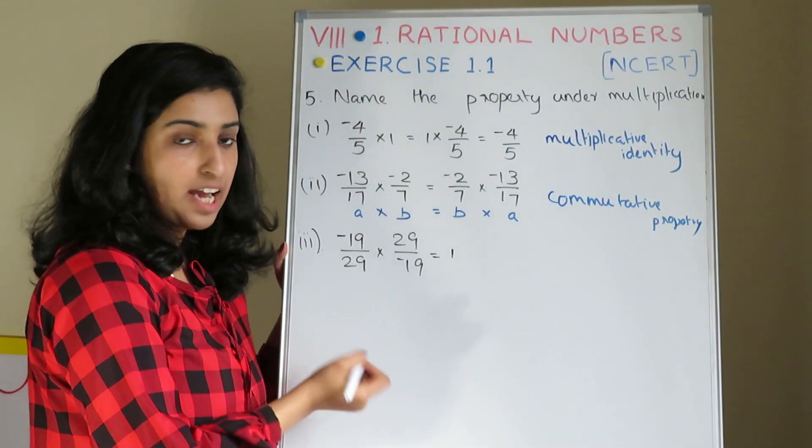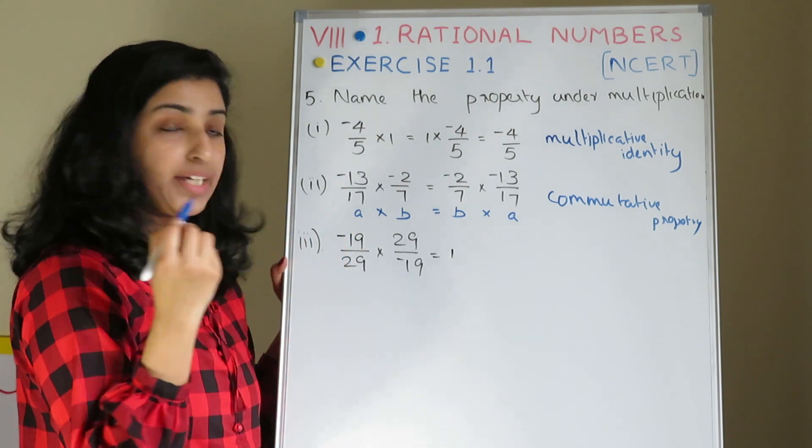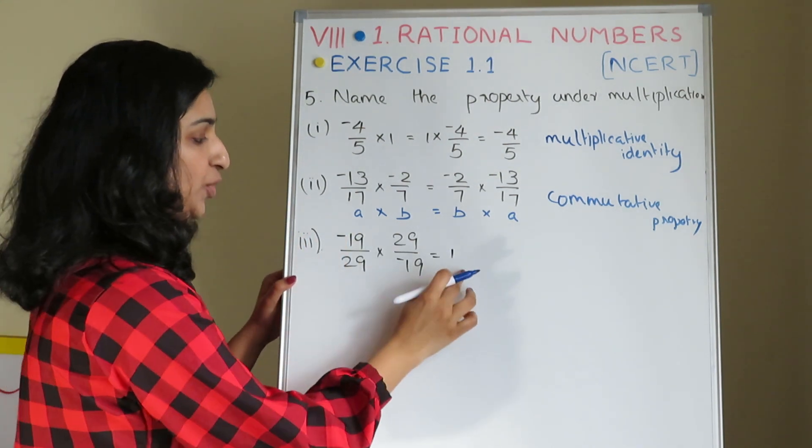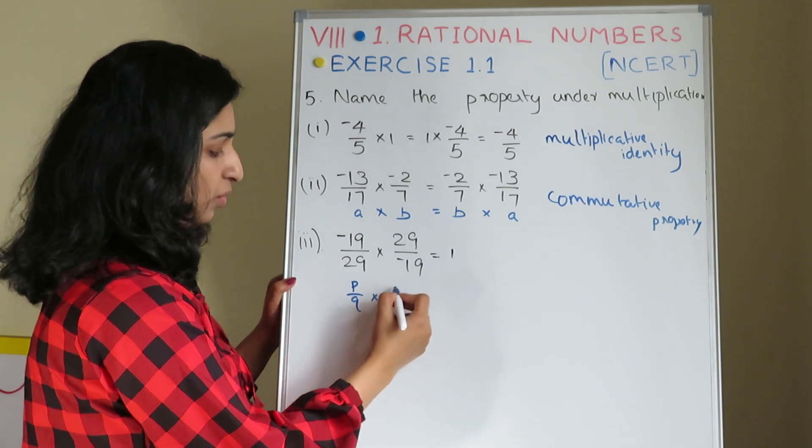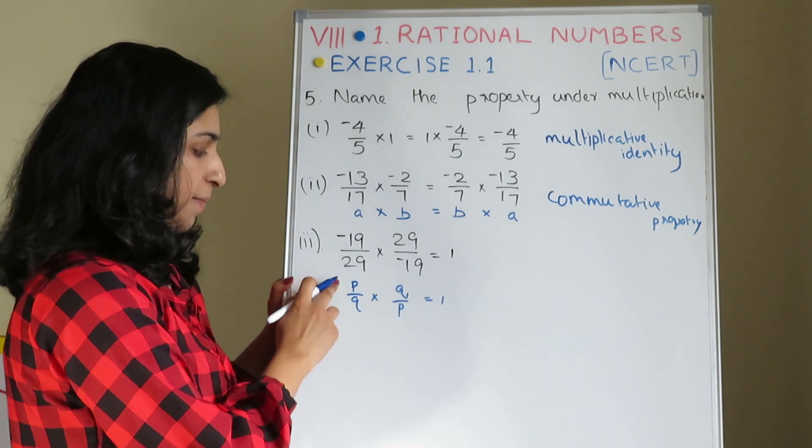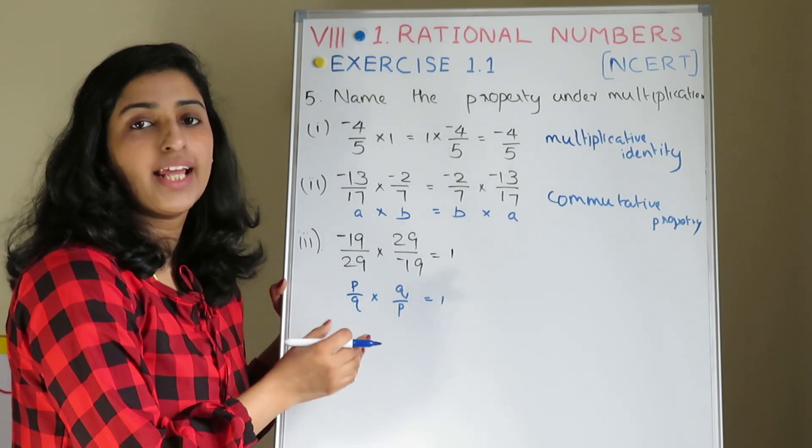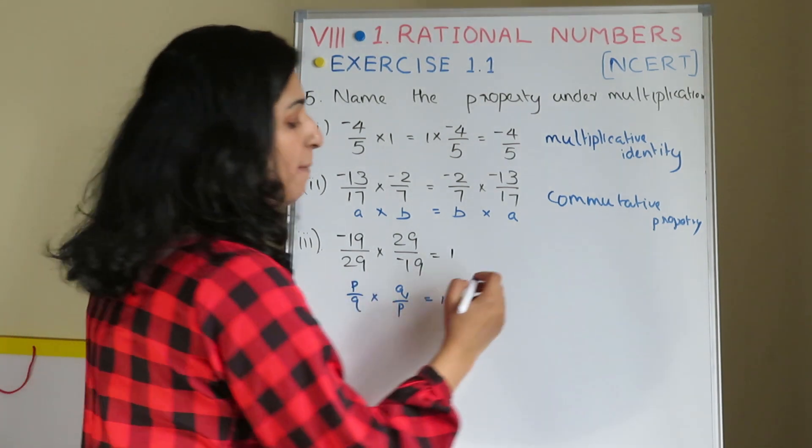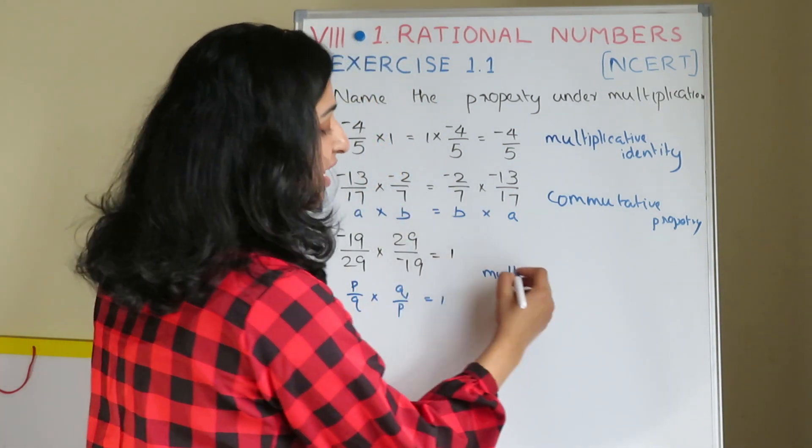Third one, minus 19 by 29 into 29 by minus 19 is equal to 1. P by Q into Q by P, that is equal to 1. One number, when we multiply the number, we get 1. This property is Multiplicative Identity. Sorry, Multiplicative Inverse.